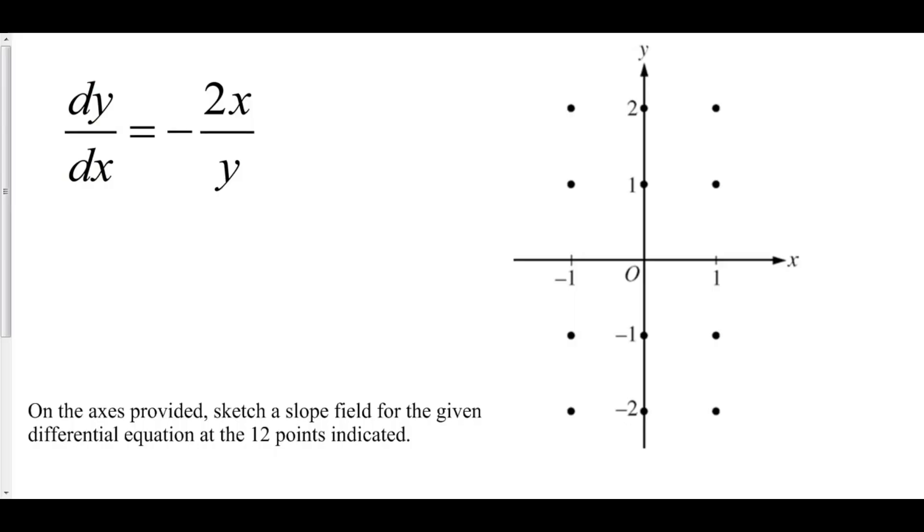Here we have a differential equation dy/dx equals negative 2x over y. This is called a differential equation because it's given by the differential dy/dx. dy/dx is the slope of the graph of y at any point (x, y).